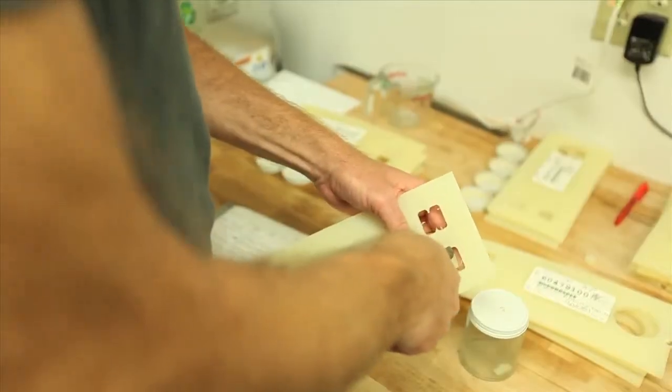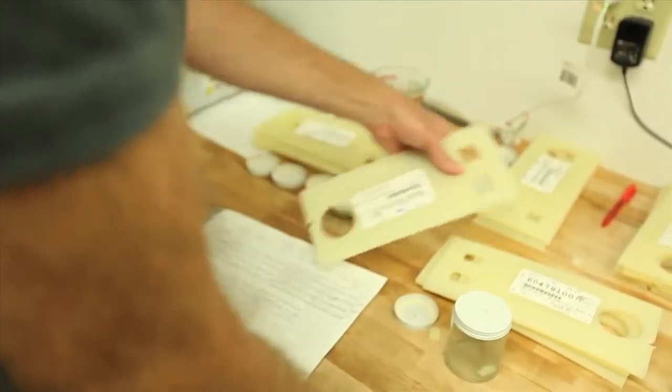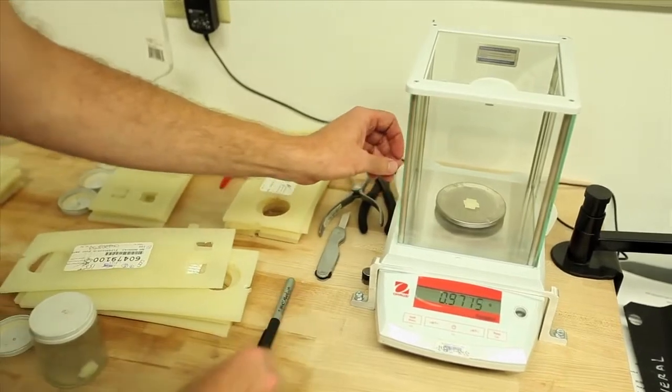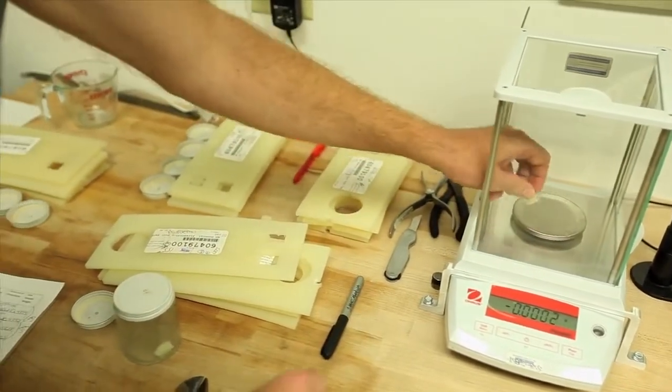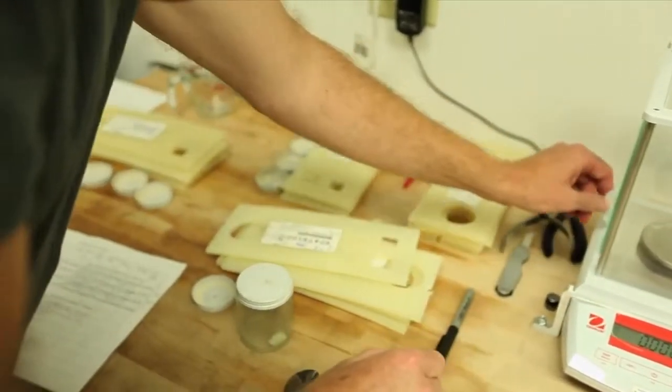In addition, Elkhart Plastics is one of the only roto molding companies to offer gel testing on site to check the scientific makeup of the cured plastic.